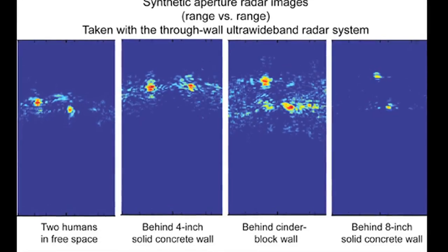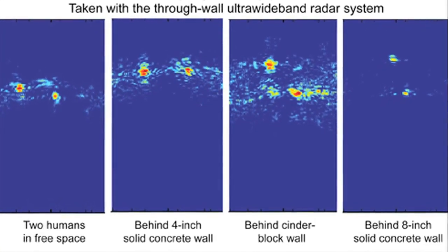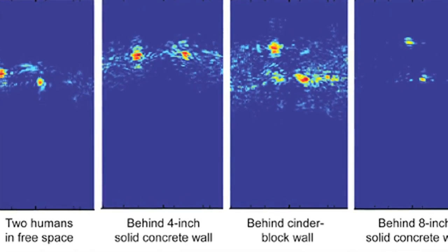When it goes back through the wall, it again loses 99.4 percent of that energy that was scattered off the humans. And now this extremely weak signal comes back through the wall towards our radar where we receive it.